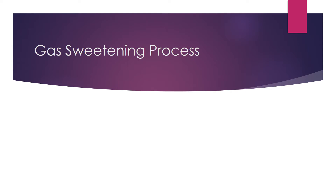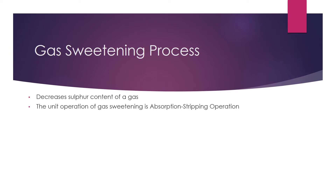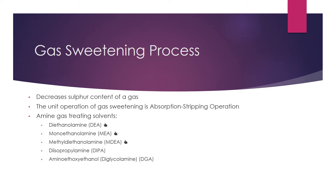Gas whitening process. The gas whitening process is a process that reduces the content of sulfur in natural gas. An example of a unit operation of gas whitening is the absorption stripping operation. The commonly used solvents for the gas whitening process are diethanol amine, monoethanol amine, and methyl diethanol amine. Alternative solvents that can be used are diisopropyl amine and diethanol amine. The reaction of gas whitening is sour gas reacts with amines and forms lean amines, and gas is removed.